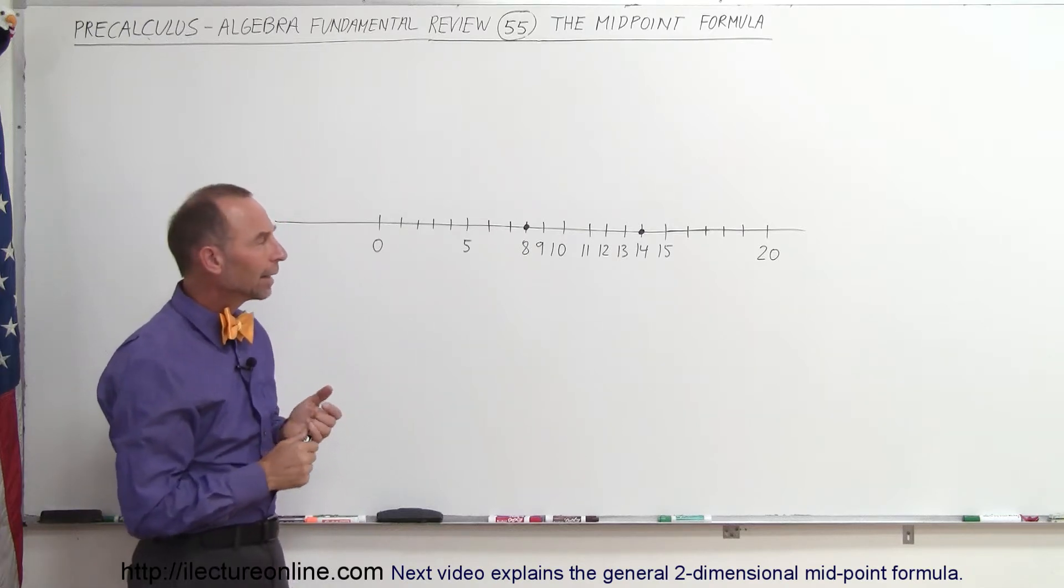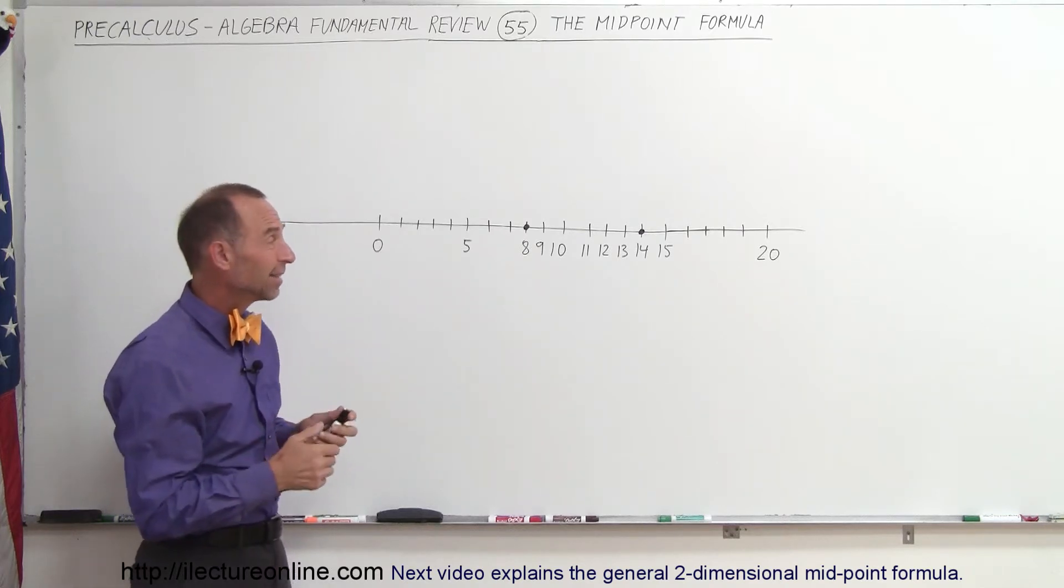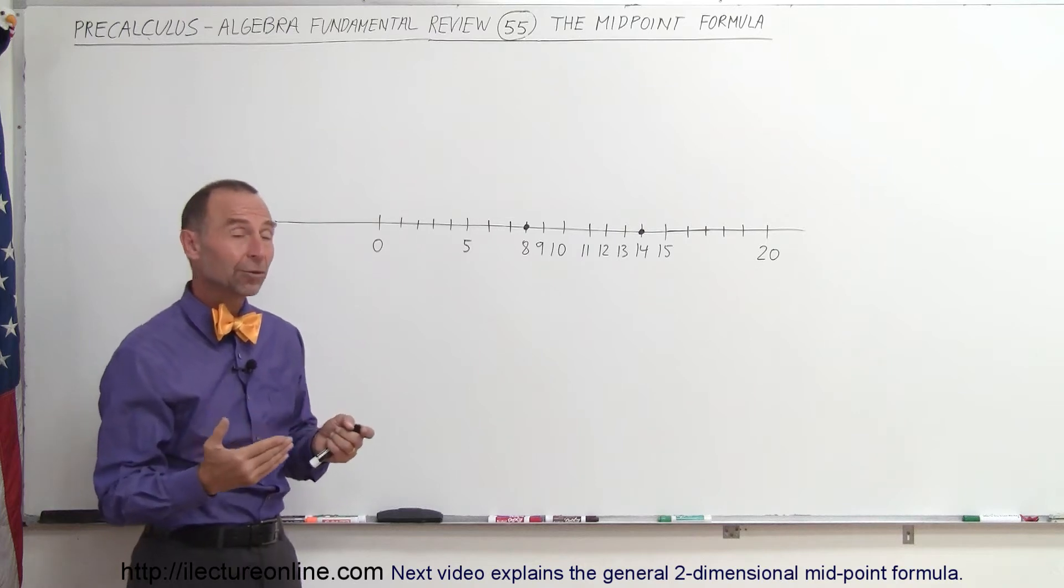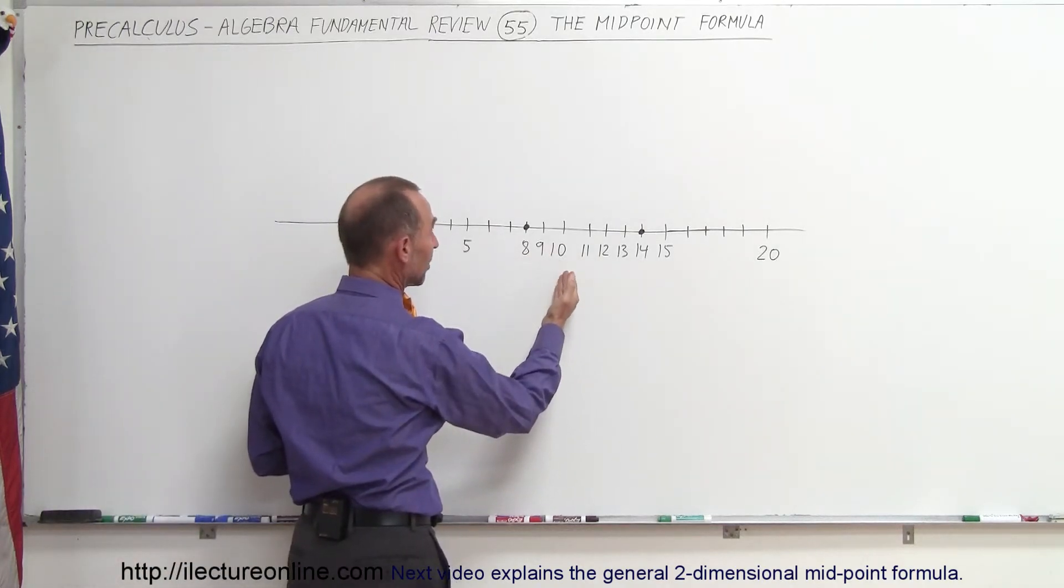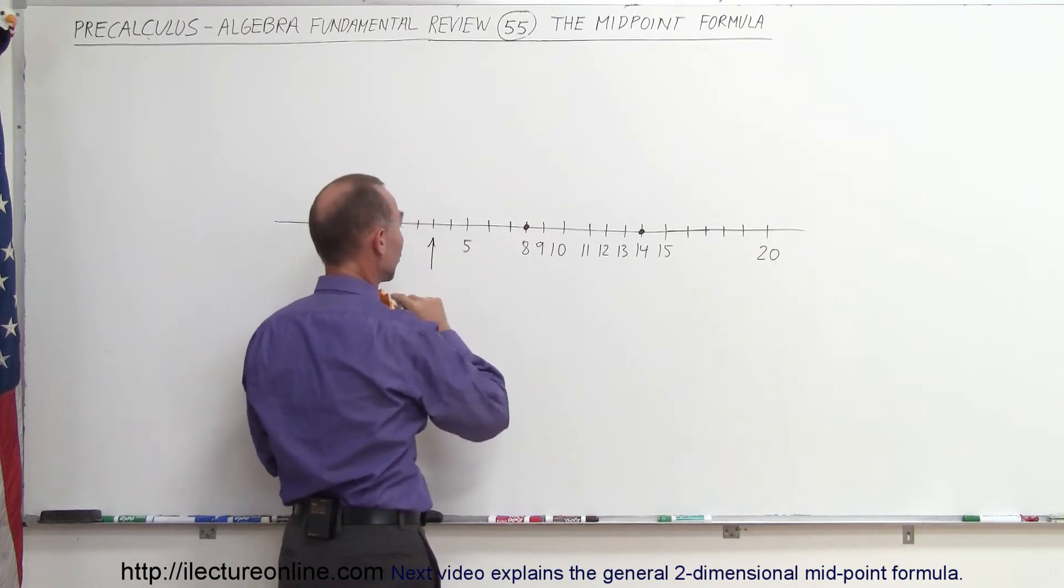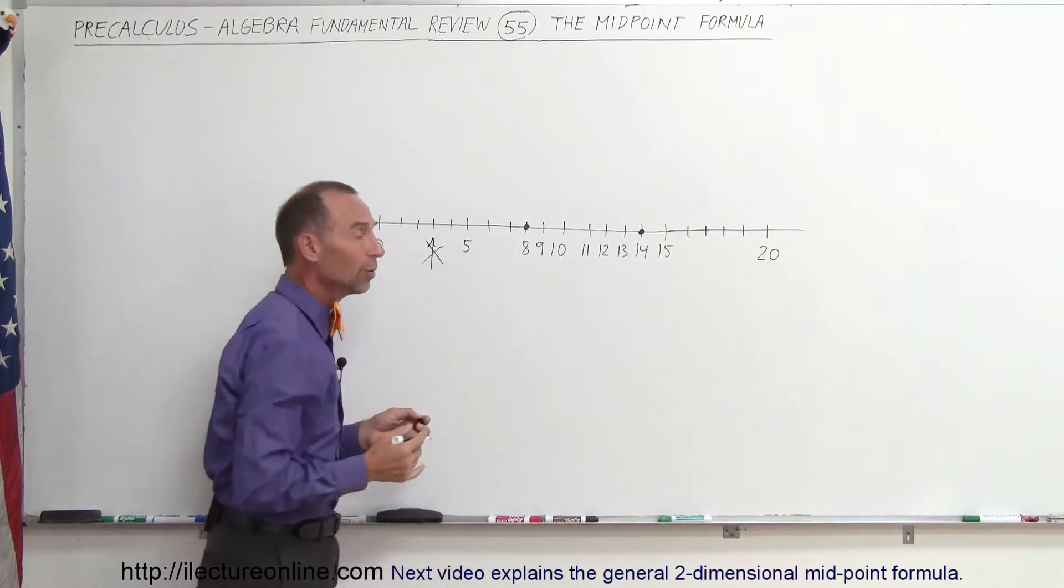But how do we calculate that? A lot of times what we do is we take the difference between the two numbers and divide by 2. For example, if we take 14 minus 8, that gives us 6, divided by 3 gives us 3, which is this point right there, and that's not the middle point between those two.